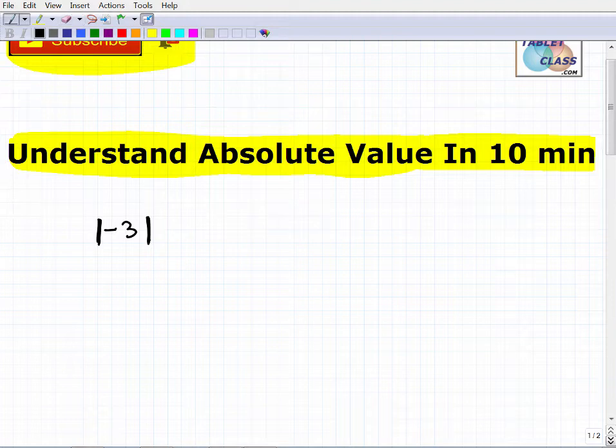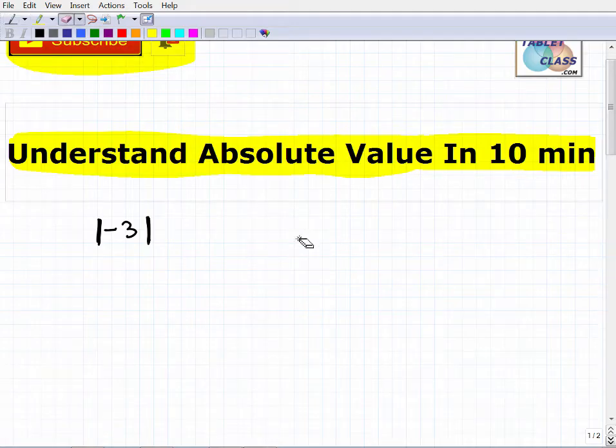Now, just as an aside, real quick, there is something later on that looks like this. If you're studying a little bit more advanced algebra, they have long vertical bars, they're longer. This is finding the determinant of a matrix. So you don't want to confuse this with absolute value. But with that being said, let's just stick with the absolute value, real basic situation like this.